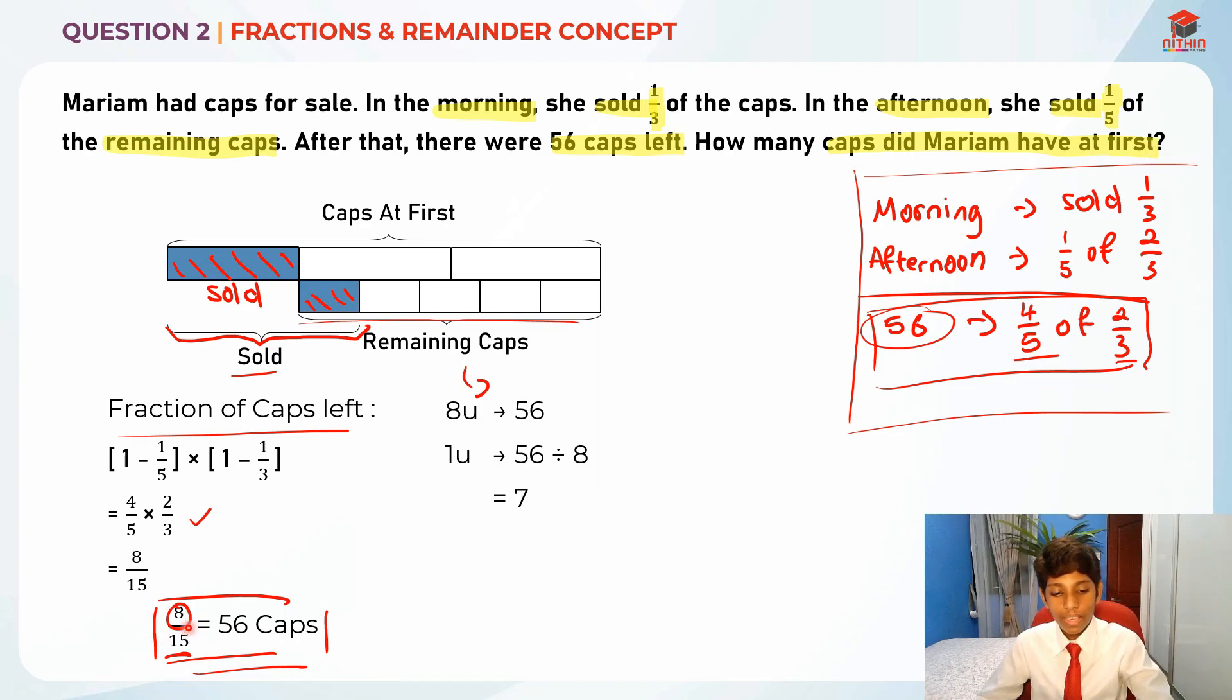Fifteen units as you know is actually two thirds. By finding that you can find 15 units. Fifteen units is 15 times 7 which will give you 105. Eight over fifteen, 15 is the whole set, while 8 is just 4 over 5 of 2 thirds. Fifteen is 3 over 3, the whole thing. If you find 15 units you get 15 times 7 which gives you 105 as the answer.